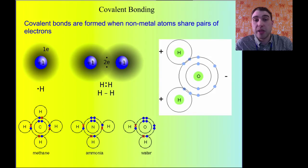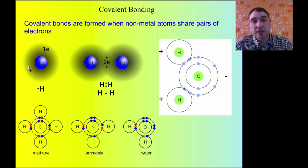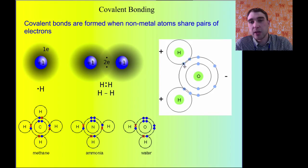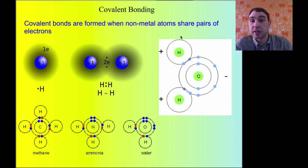Covalent bonding happens when two non-metals share electrons between them. For example, hydrogen has one electron in its valence shell. If you put two together, they can both share two electrons, making them stable — hydrogen wants two electrons in its outermost shell. In water, oxygen has six electrons in its outermost shell and hydrogen has one. An oxygen bonded to two hydrogens can share electrons, giving oxygen eight electrons in its outer shell — making it stable — and each hydrogen has two electrons, also stable. We'll go through how to draw Lewis dot structures of covalent structures a bit later.